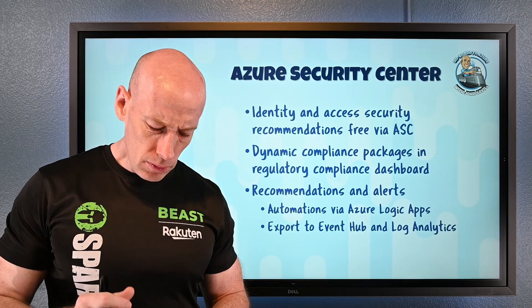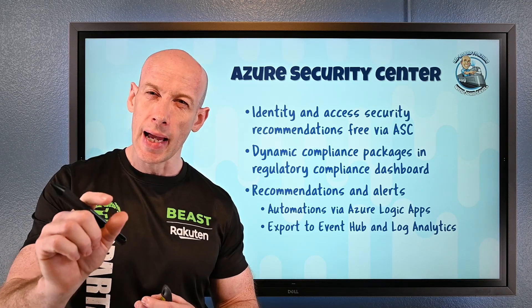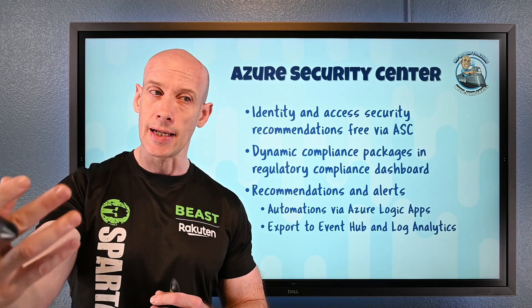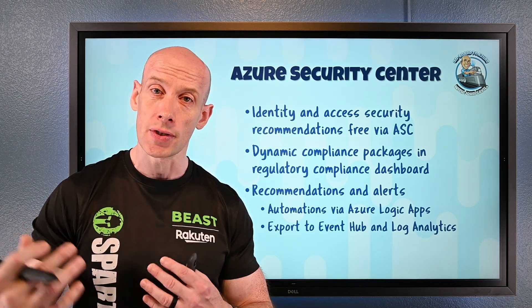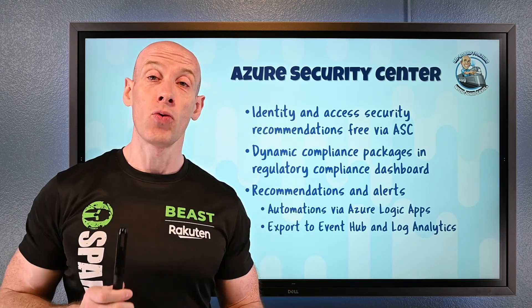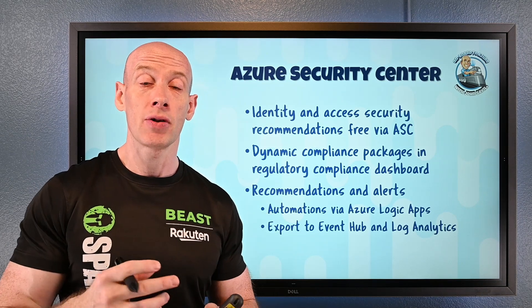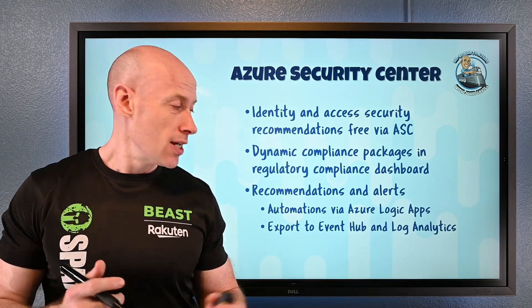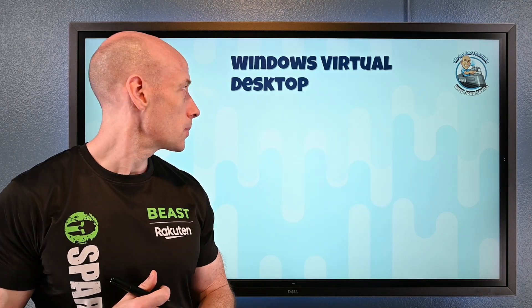Recommendations and alerts now have two new ways to act on them. First, you can fire off a Logic App on a recommendation or alert — Logic Apps give you a visual flow designer with many connectors, so you could raise an ITSM ticket, for example, with templates to walk you through it. Additionally, you can export them to Event Hub, where a third-party SIEM can subscribe and surface them, or send them to Log Analytics.